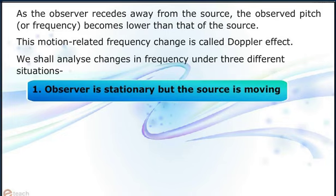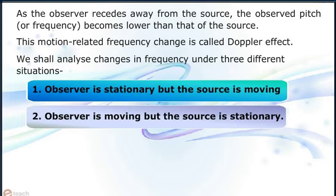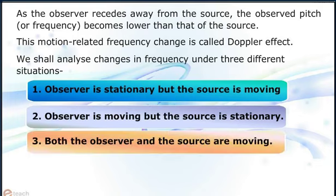One: Observer is stationary but the source is moving. Two: Observer is moving but the source is stationary. Three: Both the observer and the source are moving.